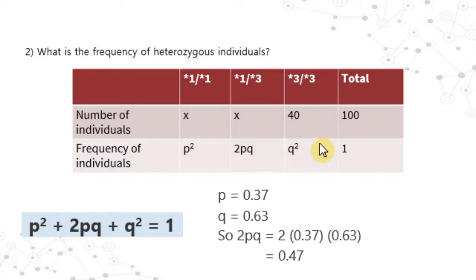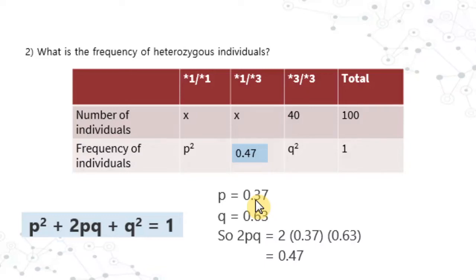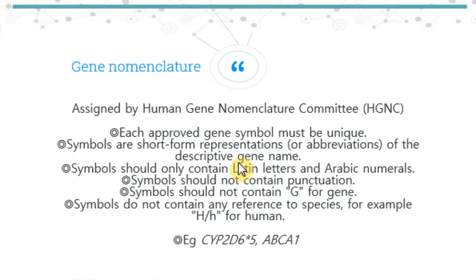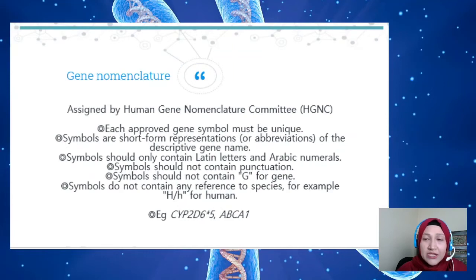Next, what is the frequency of heterozygous individuals? They are asking for 2pq. Since p is 0.37 and q is 0.63, heterozygous genotype frequency is 2 × 0.37 × 0.63, which equals 0.47 — so 47% of individuals are heterozygous.